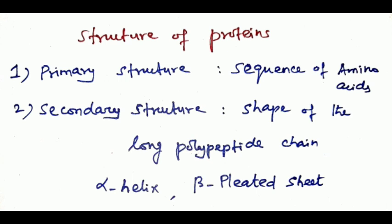Proteins have four structures: one is primary structure, second one is secondary structure and tertiary structure, fourth one is quaternary structure.